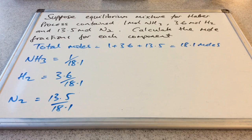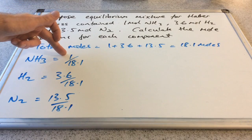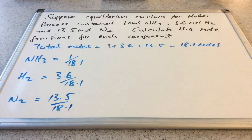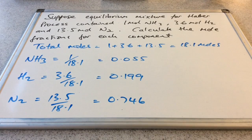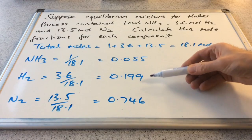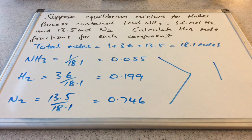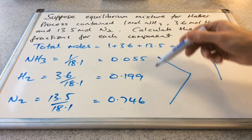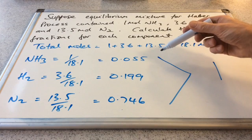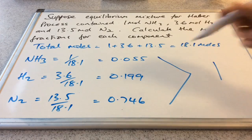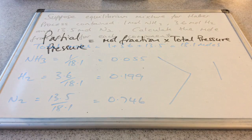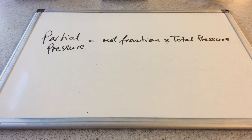The mole fractions are just the individual moles of each component divided by the total moles. I've worked those fractions out as decimals. An important point: the sum of the mole fractions obviously has to add up to 1. So as a quick check while doing the calculation, once you've calculated all your mole fractions, just make sure they add up to 1.